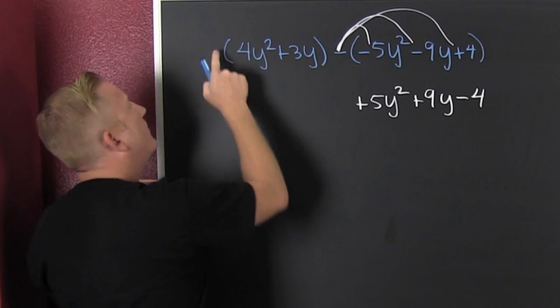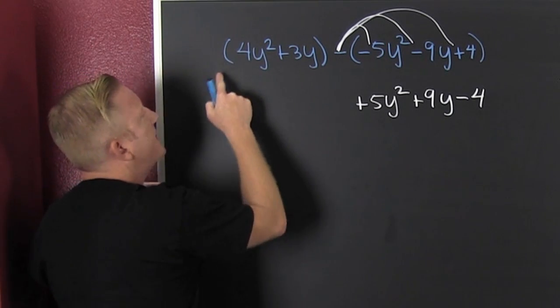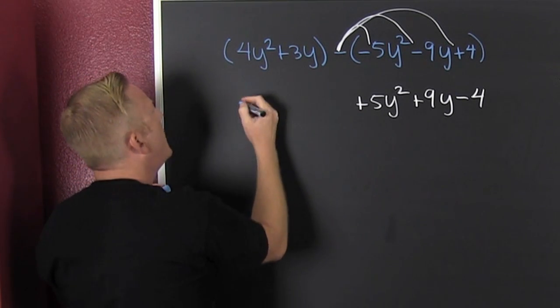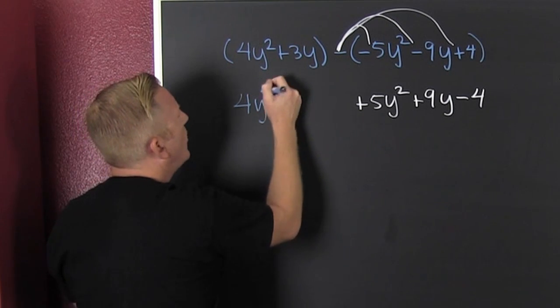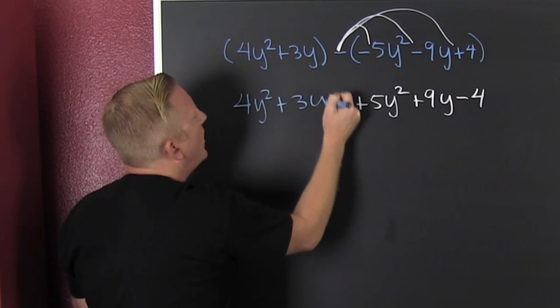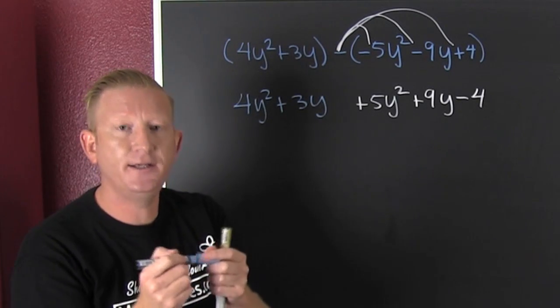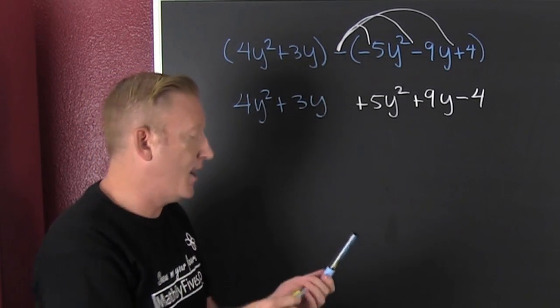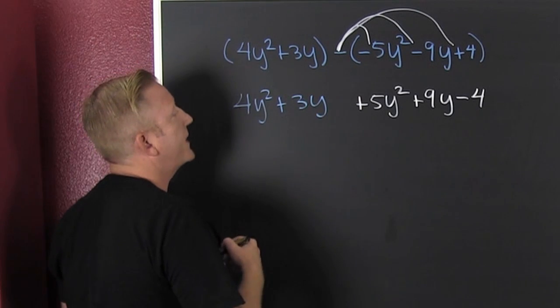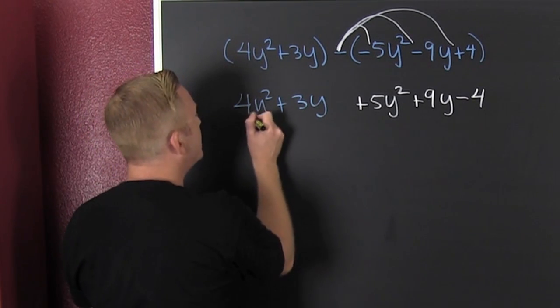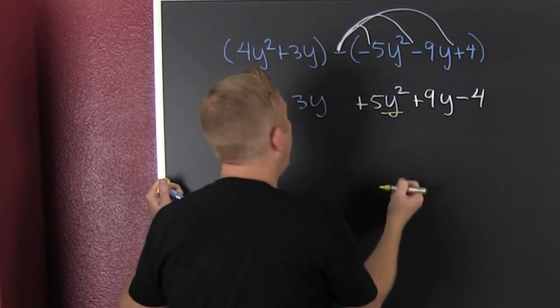I'm not going to do anything here because there's no minus outside, so those parentheses are unnecessary. That's 4y² plus 3y. Now we gather, collect, and combine like terms - terms with exactly the same variables raised to exactly the same powers.